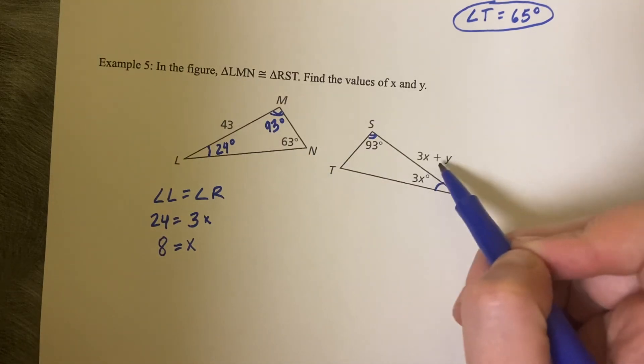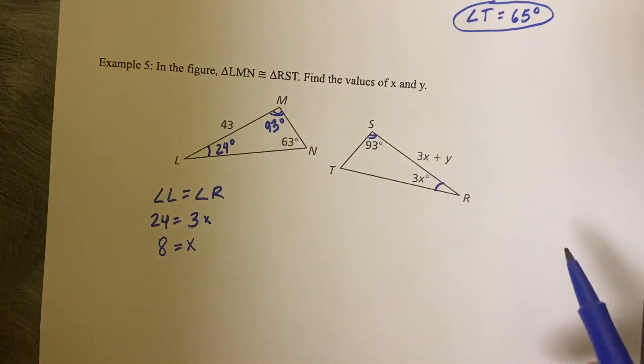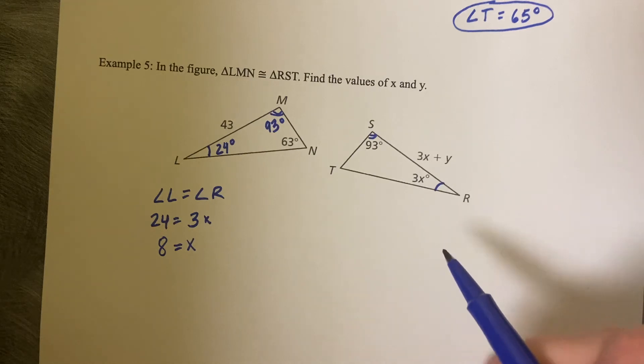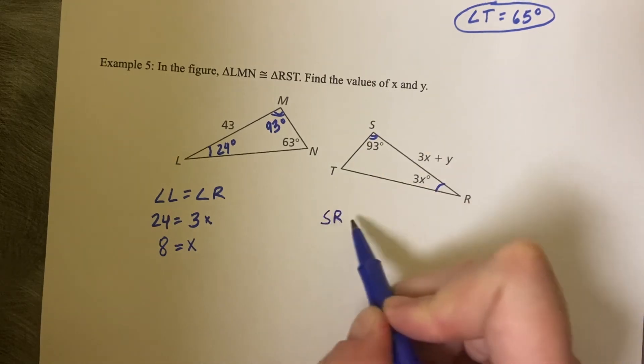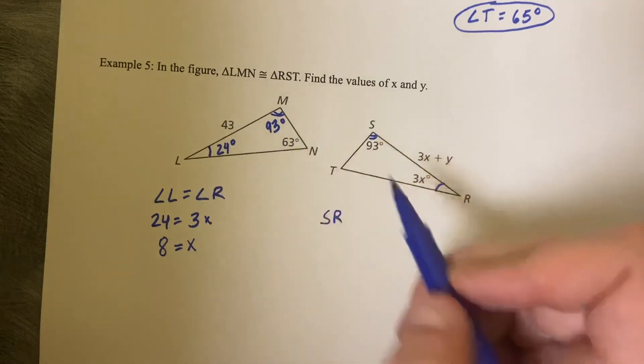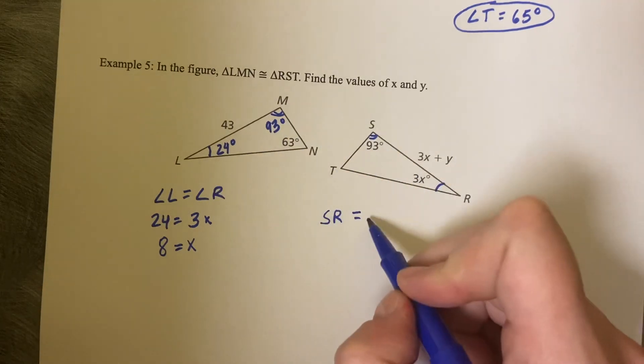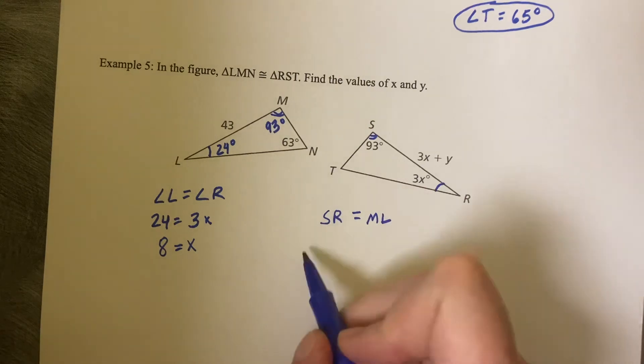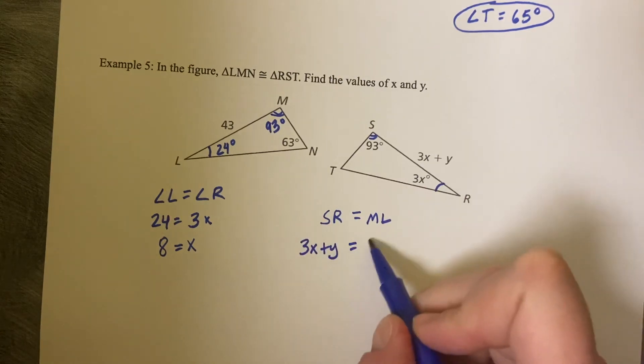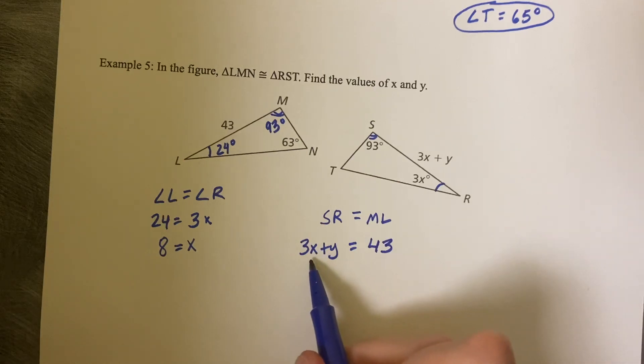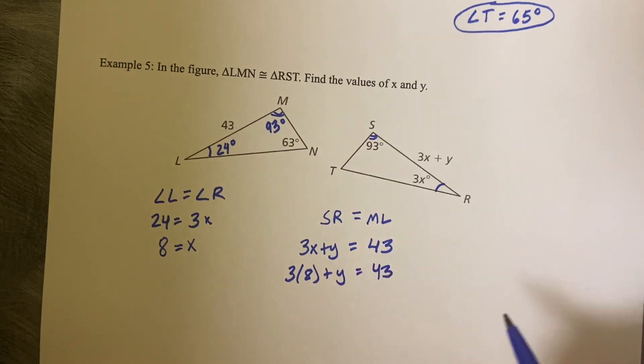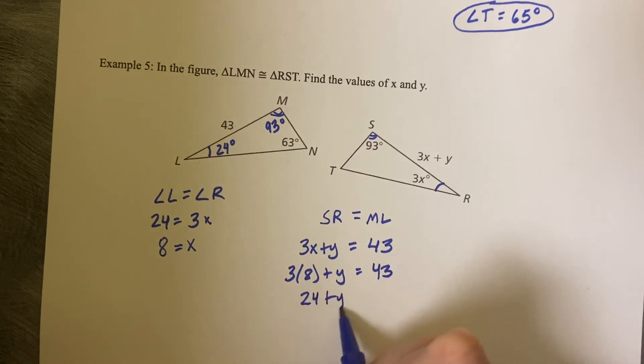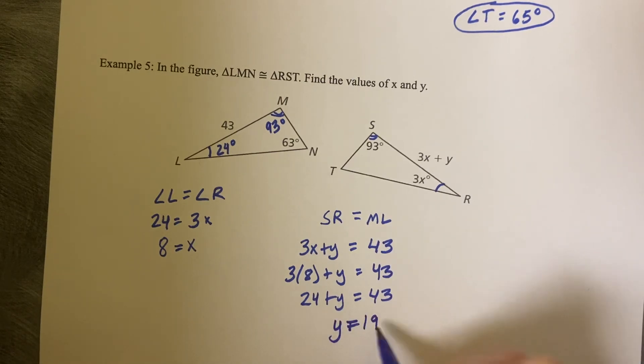Now, 3X plus Y, SR is congruent to the not quite the longest side, the second to longest side, the medium side. So if we say SR, or I really should say LM first, but that's okay. SR is equal to ML, we can say 3X plus Y equals 43, but I know what the X value is. So 3 times 8 plus Y equals 43, 24 plus Y equals 43, subtract 24, and Y equals 19.